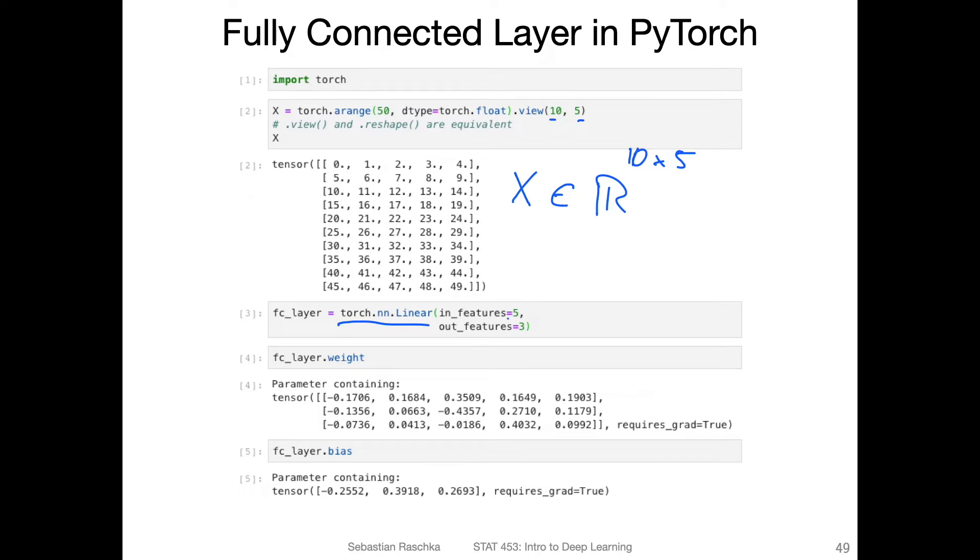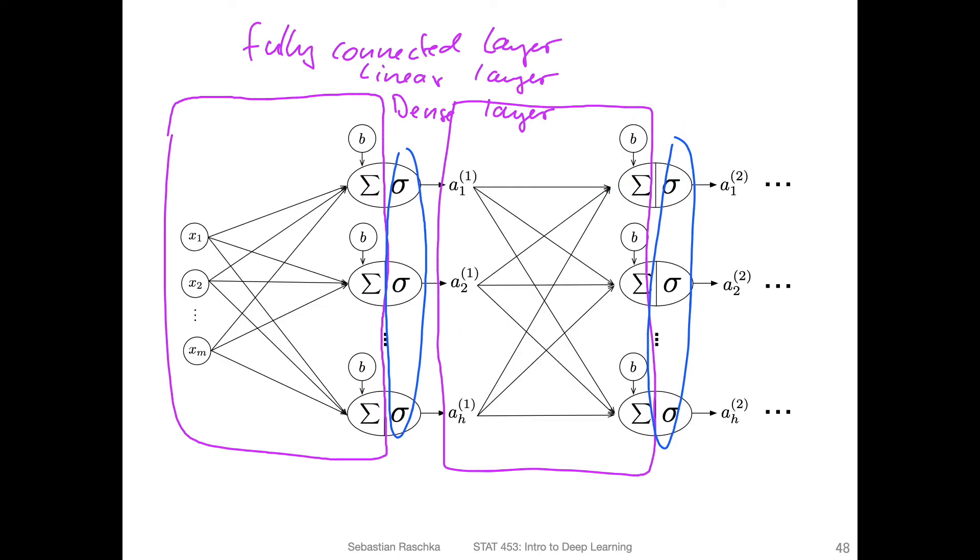When we initialize this linear layer, we give it a number of input features and the number of output features. Here we have five features, like that's our design matrix, the n times m matrix. Let's say we want three output features.